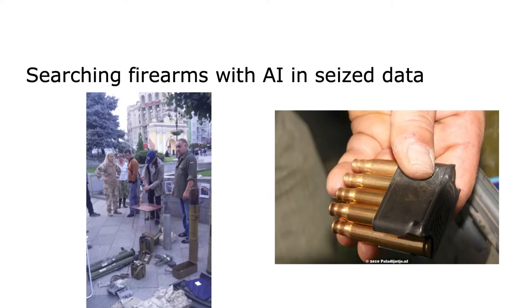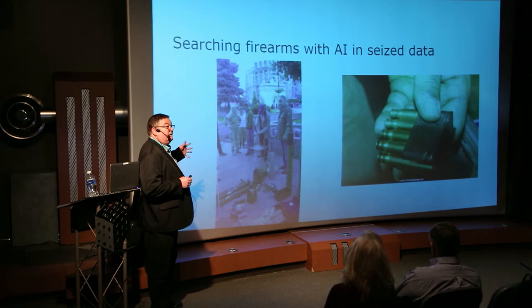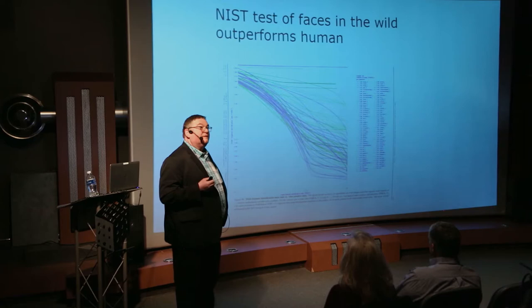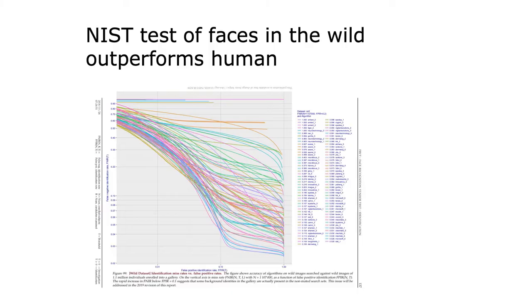At the NFI, if you have lots of information on mobile phones related to a crime, AI can search for firearms in that data — similar to how it recognizes cars. You have to be aware of bias though — most of those algorithms were trained on Caucasian males, which raises some issues. Notably, in the last NIST test, Microsoft's algorithm really outperformed human beings in facial recognition.